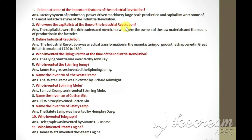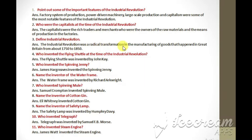Who were the capitalists at the time of the Industrial Revolution? The capitalists were the rich traders and merchants who were the owners of the raw materials and the means of production in the factories.